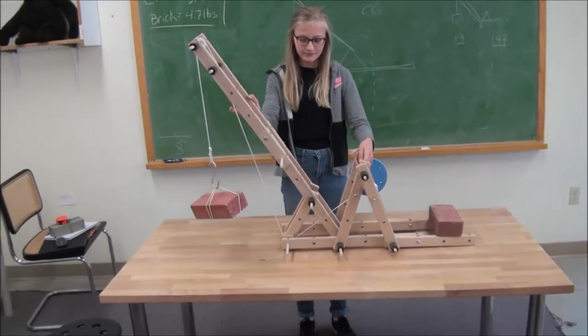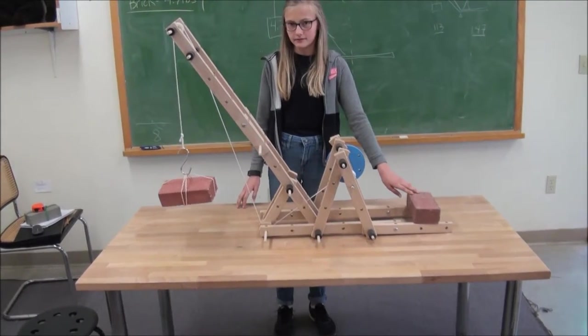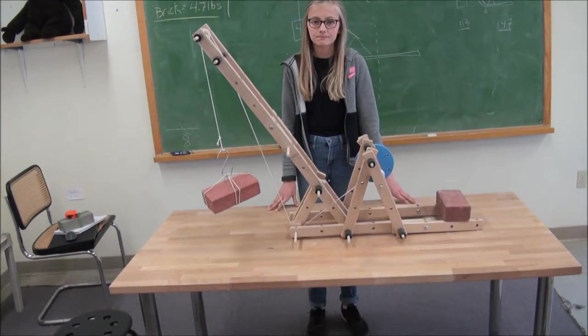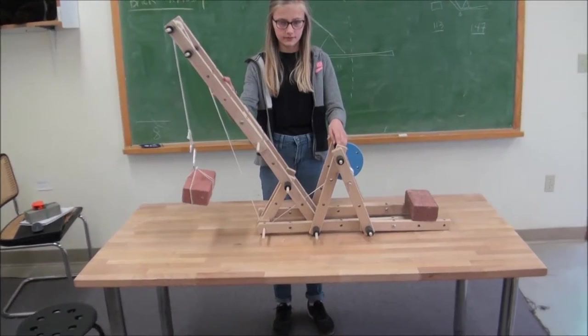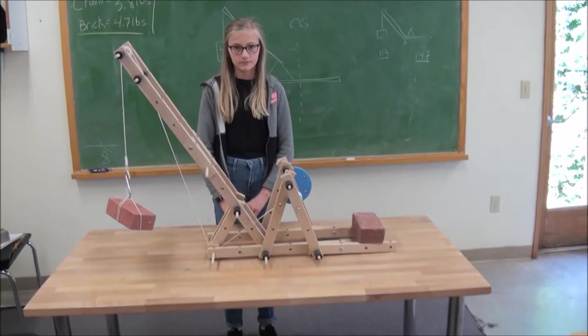You've got the weight hanging from the boom, and then the counterweight here. So the weight hanging from the boom wants to tip the crane this way. And the weight on the other side wants to tip it the other way. And we try to keep it balanced like a seesaw.